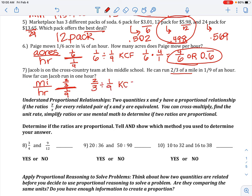To divide fractions, keep change flip. So, you're doing 2 thirds times 9 over 1, which is 18 over 3, which divides and simplifies to 6 miles per hour.